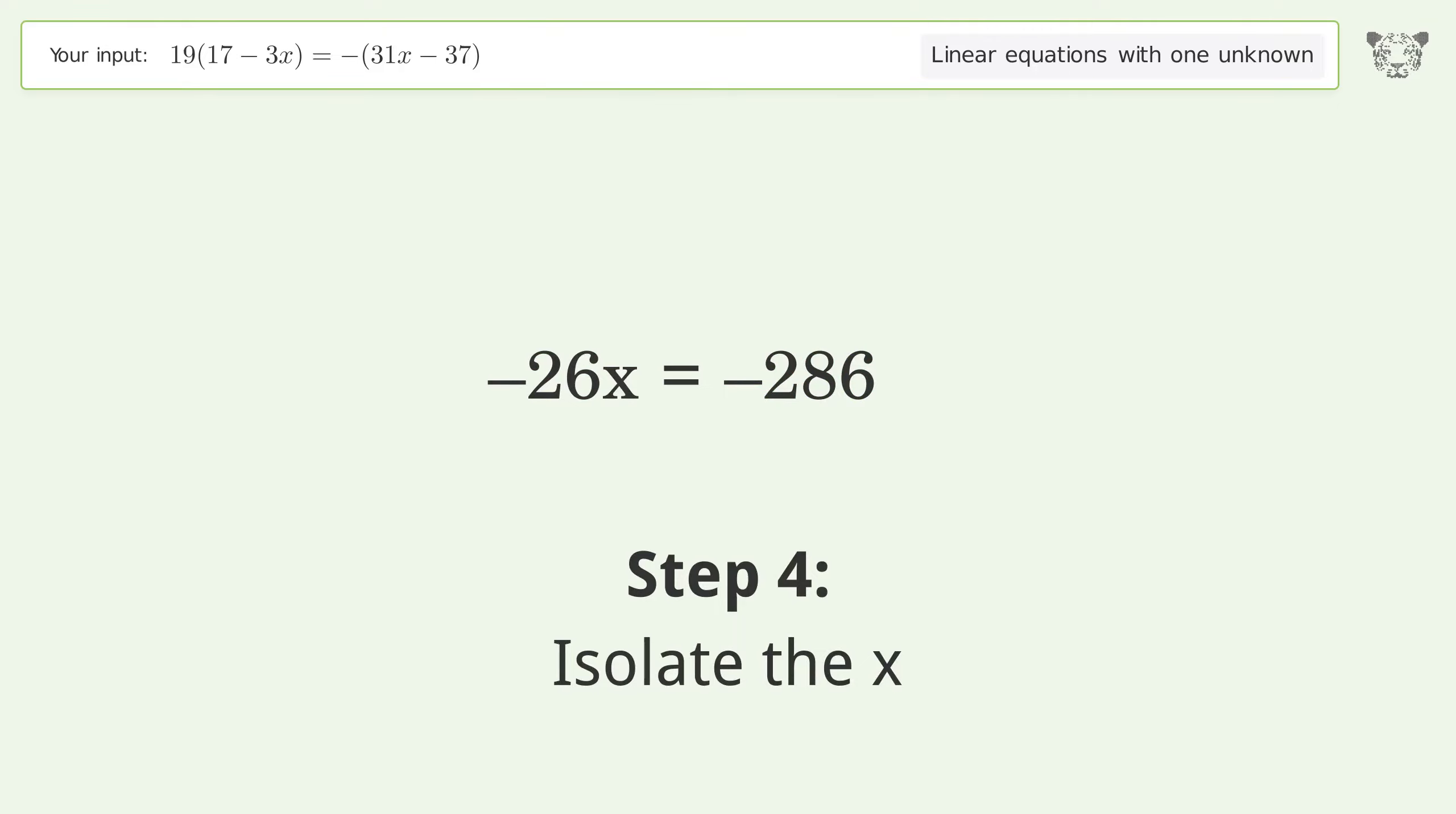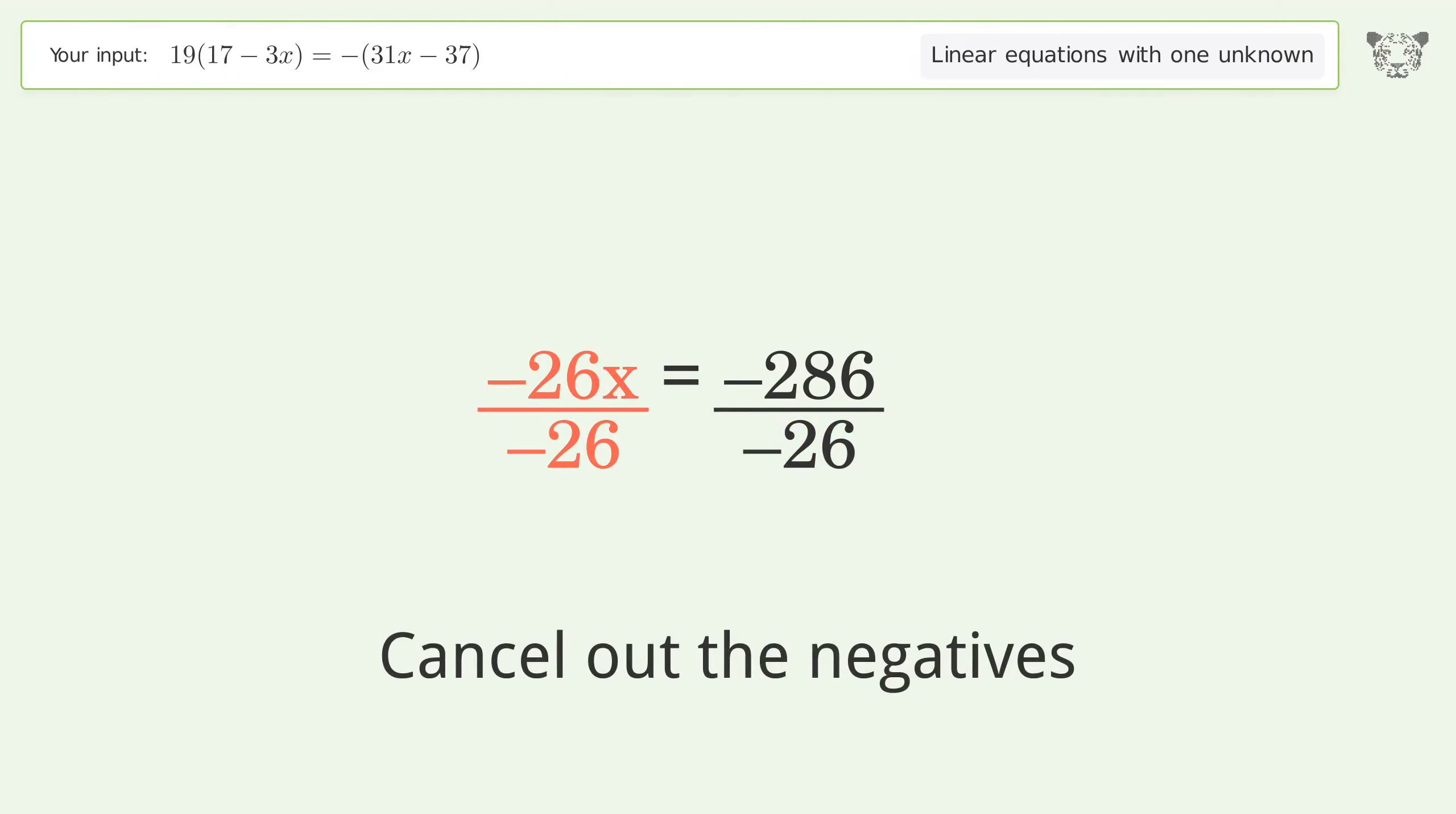Isolate x by dividing both sides by negative 26. Cancel out the negatives and simplify the fraction.